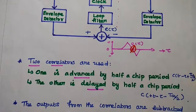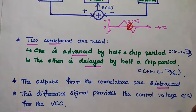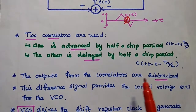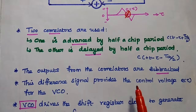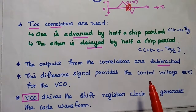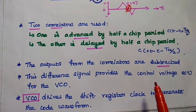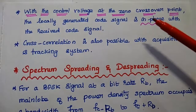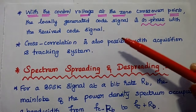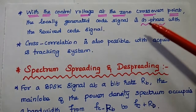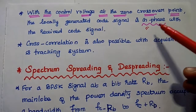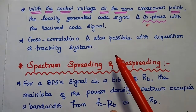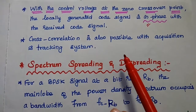To summarize the tracking system: two correlators — one advanced and one delayed by half a chip period — have their outputs subtracted to generate a control voltage that drives the VCO, which in turn drives the shift register clock to produce the synchronized code waveform. At the zero crossover point of the control voltage, the locally generated code is in phase with the received code signal. We use the autocorrelation property; cross-correlation is also possible but not widely used here.